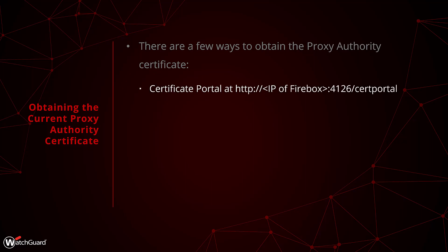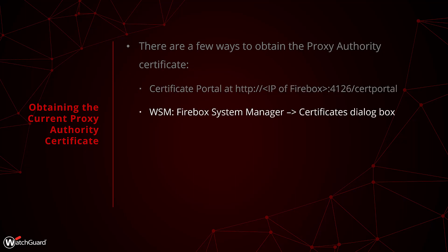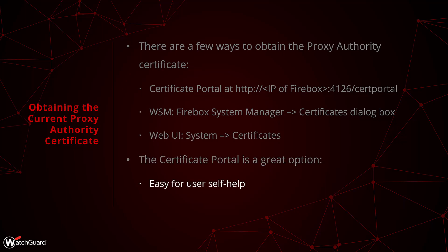The first option is to use the certificate portal running on the firebox — just connect on HTTP to the IP address of the firebox on port 4126 with the URL path /certportal. The next option is to use WSM or the Firebox System Manager tool — open up the certificates window, highlight the proxy authority, and export it. The same can be done in the web UI on the system certificates page. What's great about the certificate portal is that it's very easy for users to help themselves — it's just a page with a download button and some basic instructions.